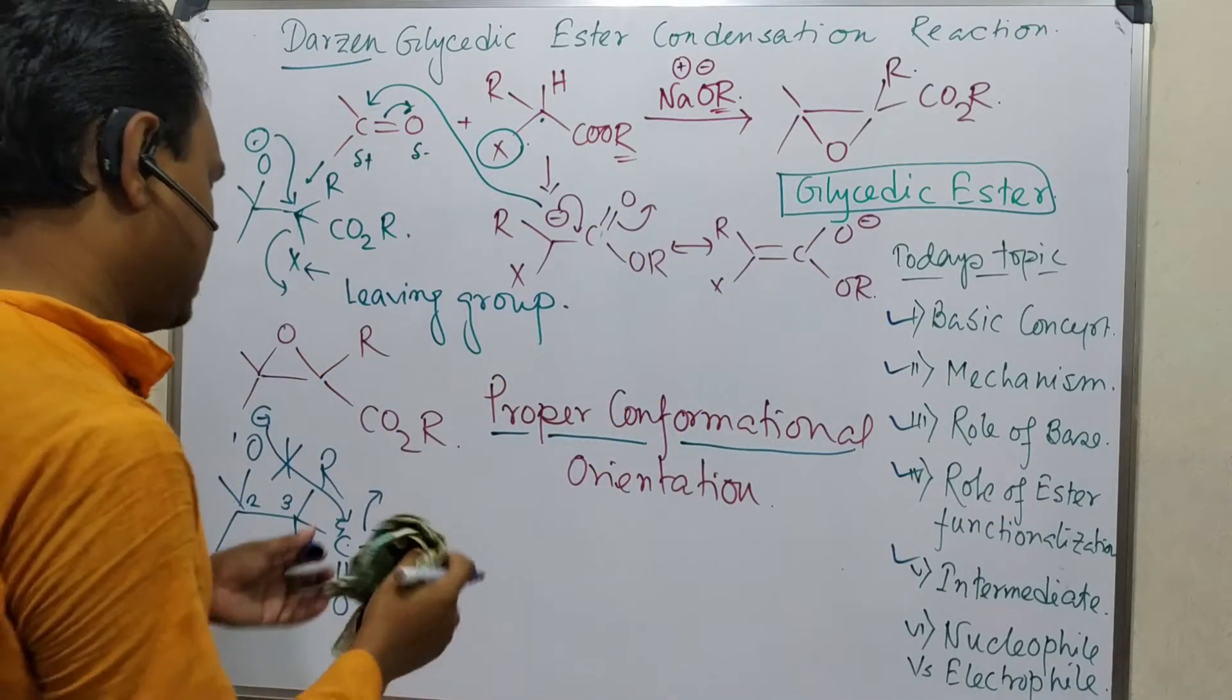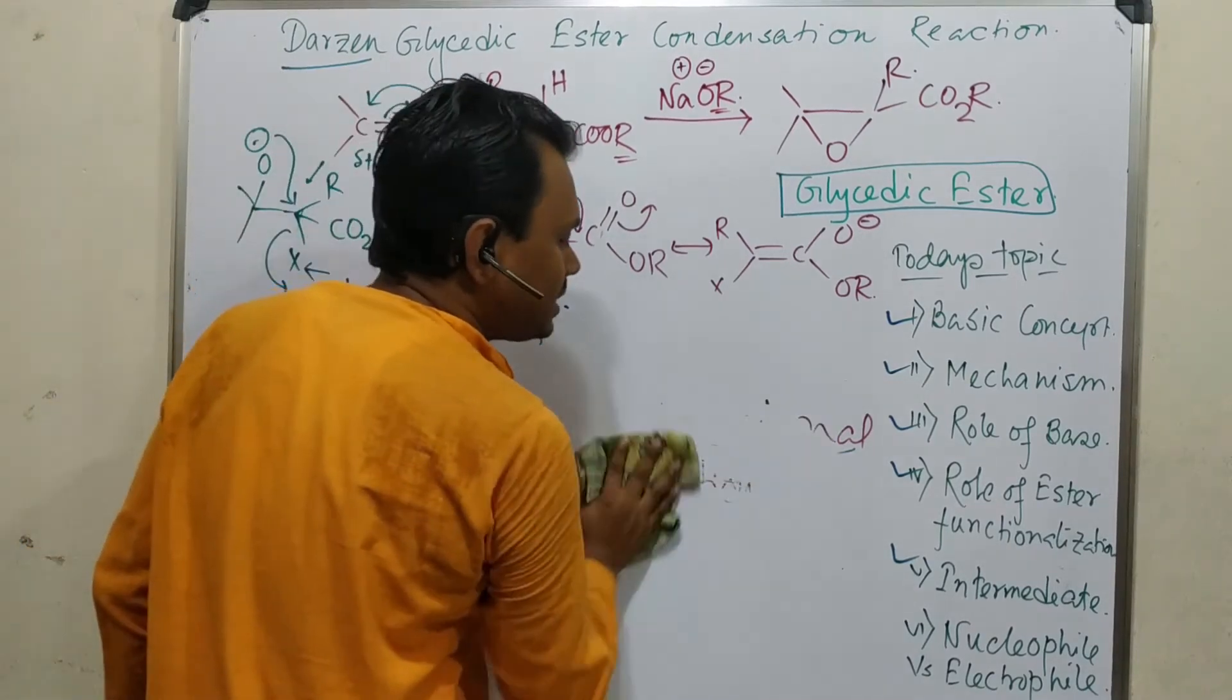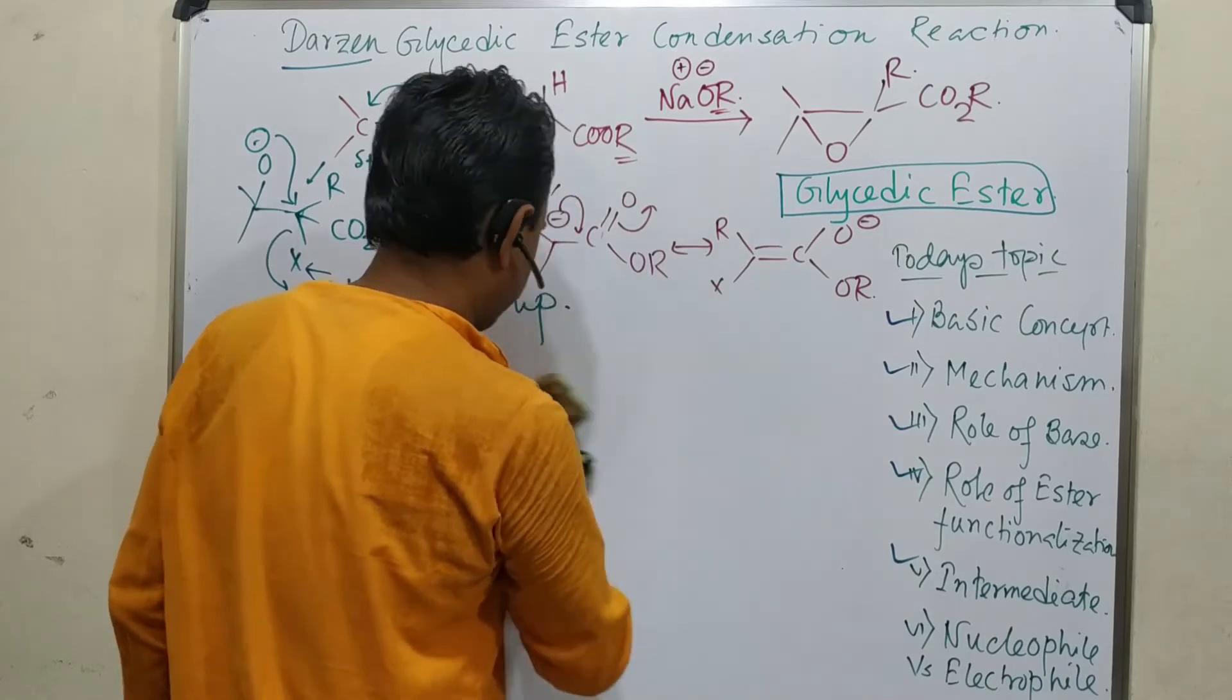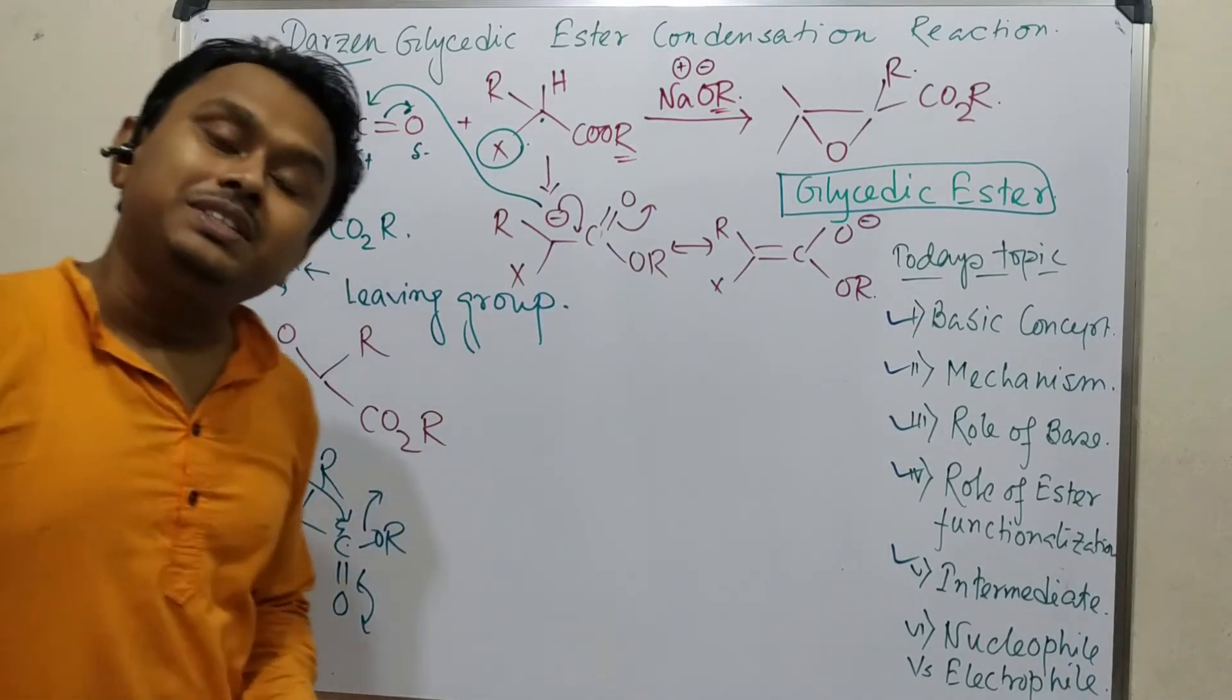Let's discuss about the intermediate. So we are saying that this alkoxy-halo alkoxide is producing as an intermediate. Fine, no problem. Is it possible to detect?